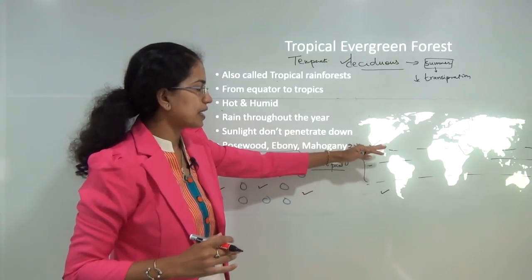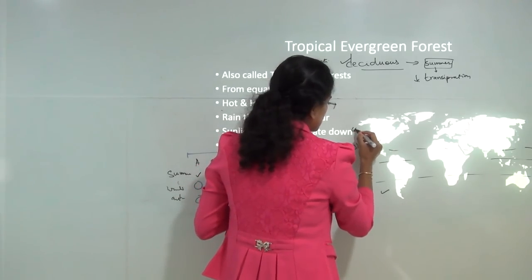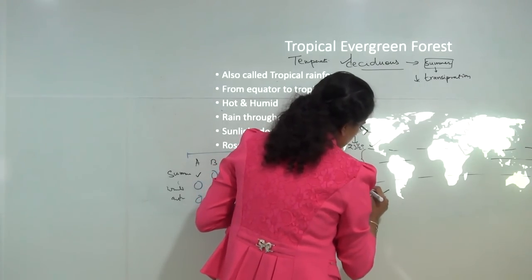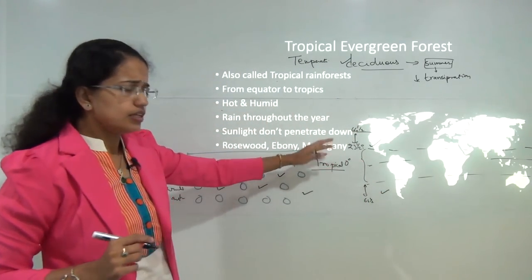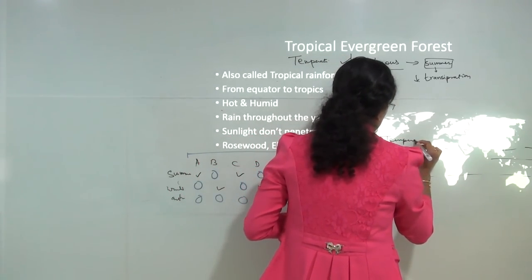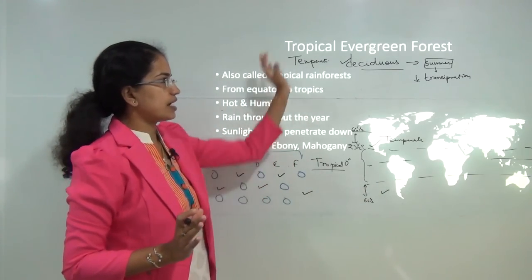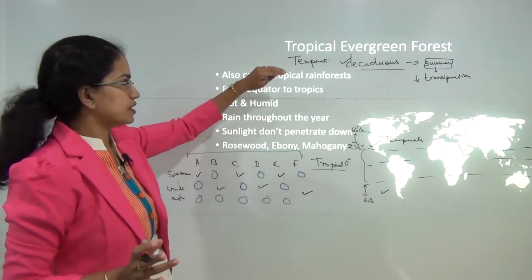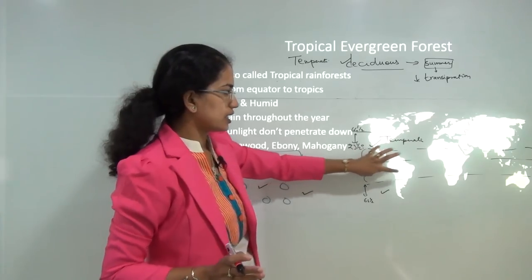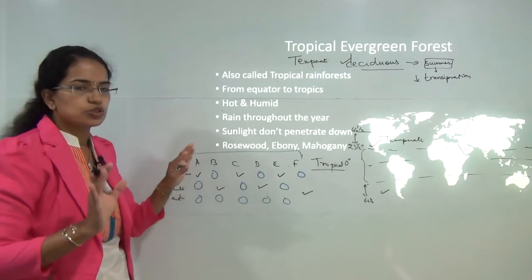Similar to tropical, a related climatic condition is temperate, but temperate occurs north and south of the tropical areas. The temperate zone usually lies from 23 and a half degrees to 66 and a half degrees, both north and south. That is where you would have temperate vegetation. Now the first forest type is tropical evergreen — meaning it occurs in the tropical region and has trees with leaves throughout the year.